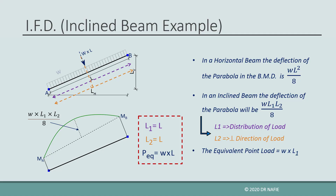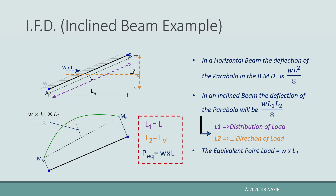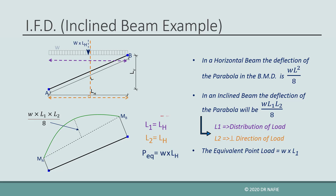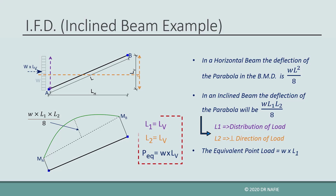The equivalent point load will be equal to W multiplied by L, and its direction will be perpendicular to the beam. If the direction of the load is changed to be horizontal, L1 will still be equal to L, but the direction of the load will be perpendicular to the vertical length, so L2 will be equal to LV. The equivalent point load will be horizontal and equal to W multiplied by L. If the load is vertical and distributed on the horizontal length, L1 and L2 will both equal LH. If the load is horizontal and distributed on the vertical length, L1 and L2 will both equal LV, and the equivalent point load will be W multiplied by LV.